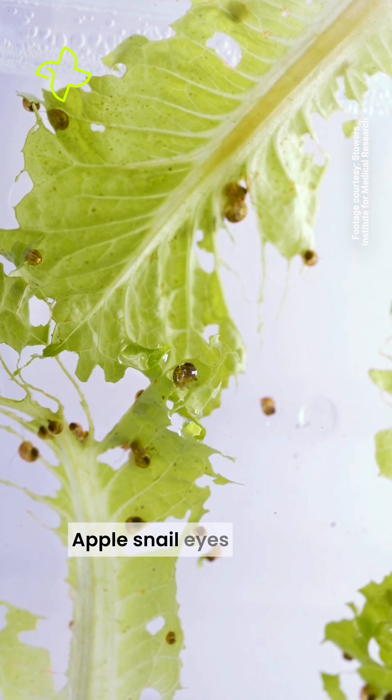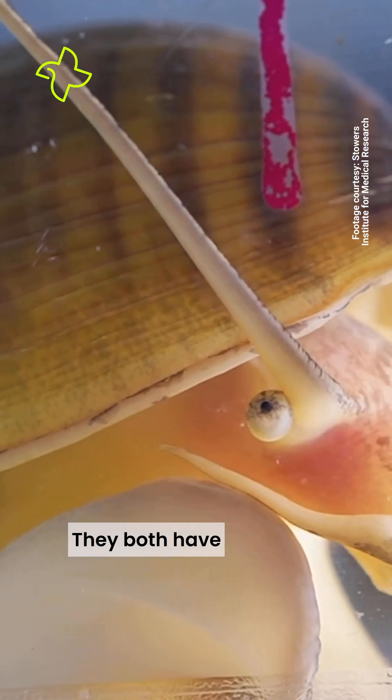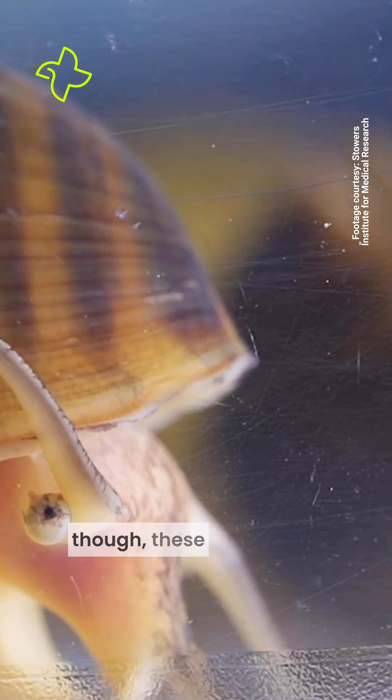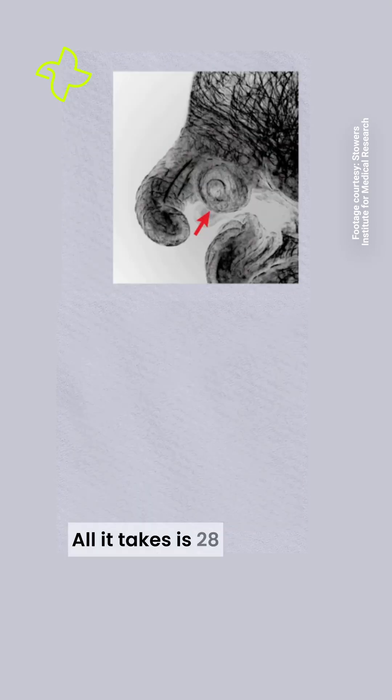Apple snail eyes and human eyes have a lot of similarities. They both have retinas, lenses, and corneas. Unlike humans, though, these snails can regrow their eyes after amputation. All it takes is 28 days.